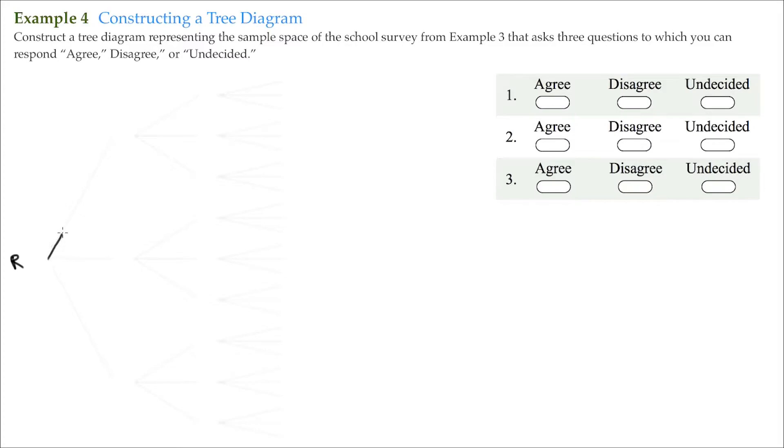So I make these branches and I go ahead and I label it like that. I have an agree, I have a disagree, and of course then I have an undecided. Those are the possible ways that I can answer the first question here, so I'm maybe just going to go up here and label that as number one.